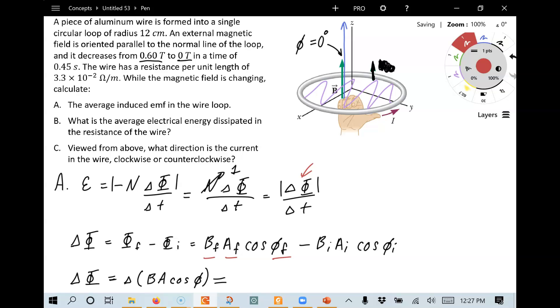In this problem, the only thing that changes is the magnetic field. Because the orientation remains the same, the area of the loop doesn't change. So we can factor out the things that aren't changing. And we can write it like this. That's the area of the loop multiplied by cosine of phi times delta B. Where delta B is the only thing that's changing.